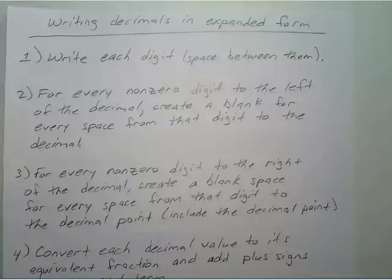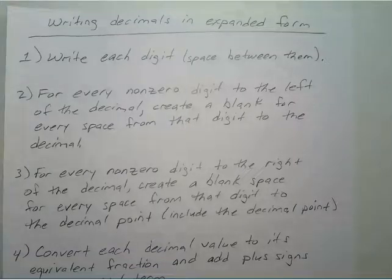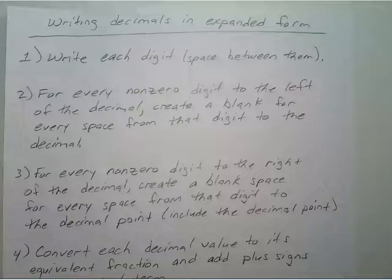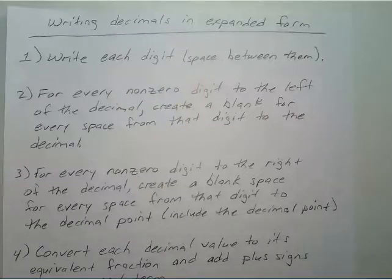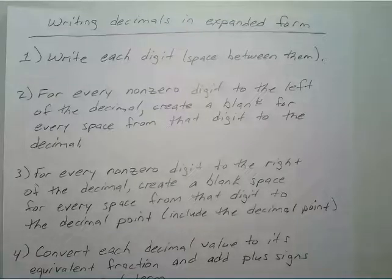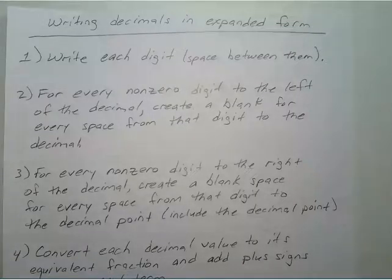This is just something to get you started. The first step is you want to write down each digit but put some space between them. For the second step, for every non-zero digit to the left of the decimal, create a blank for every space from that digit to the decimal. Steps two and three may sound a little confusing how they're worded, but the example will hopefully make sense.